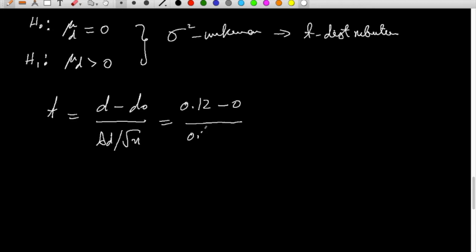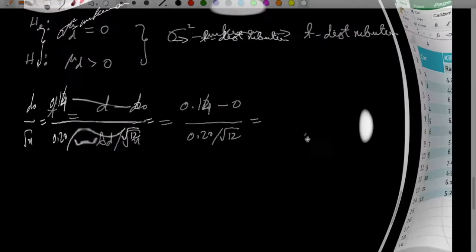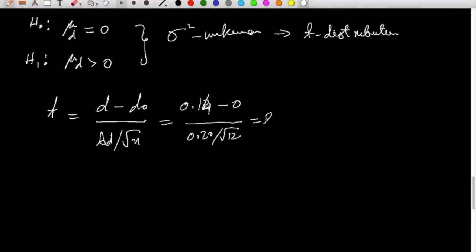D-bar is 0.20 and d-naught is 0 in our case, so it's 0.20 divided by s_d over square root n. That value comes out as 2.49 for nu equals 12 minus 1, which is 11.